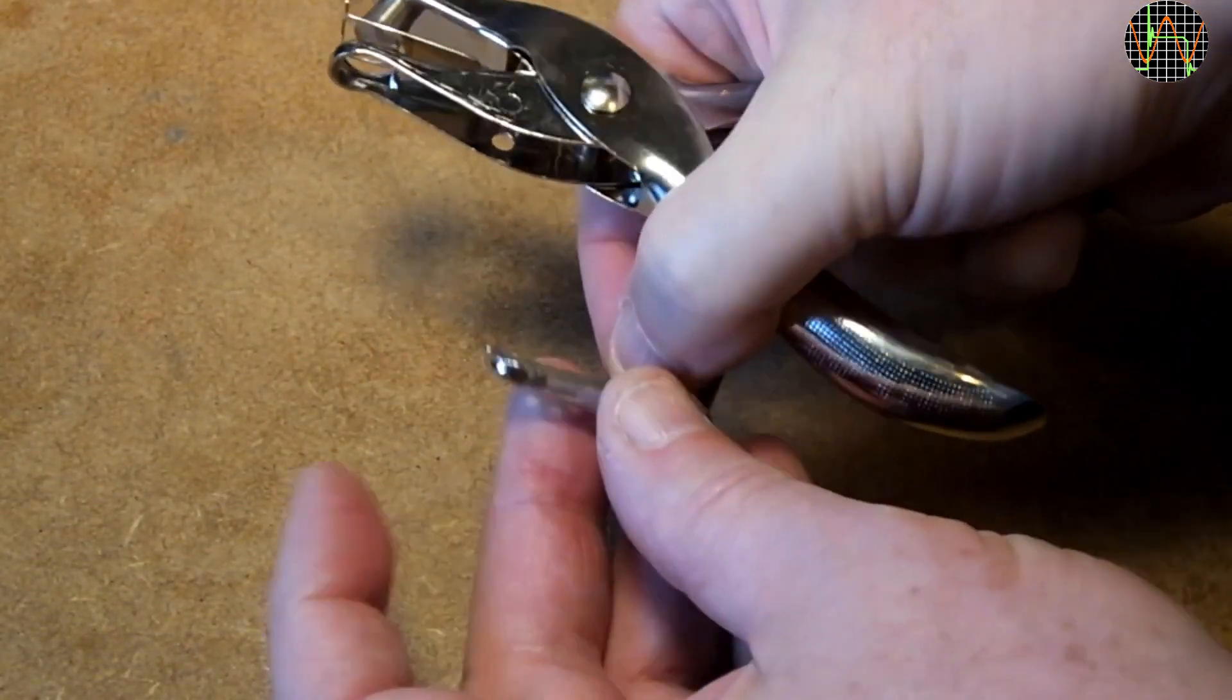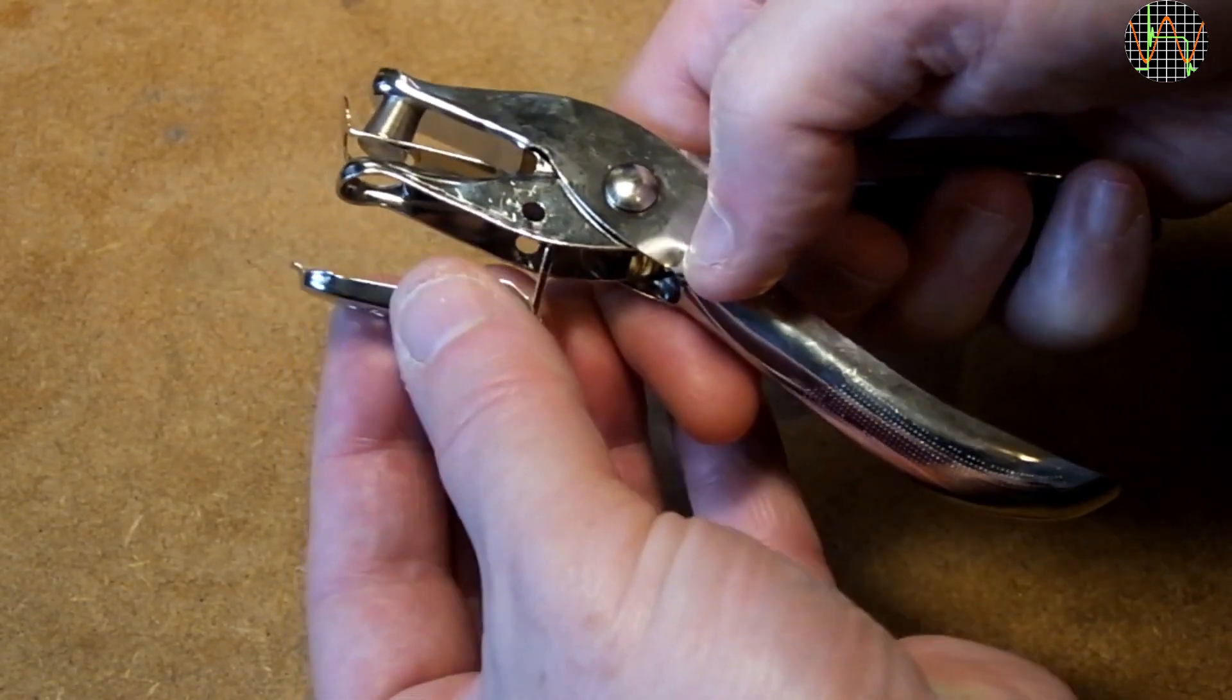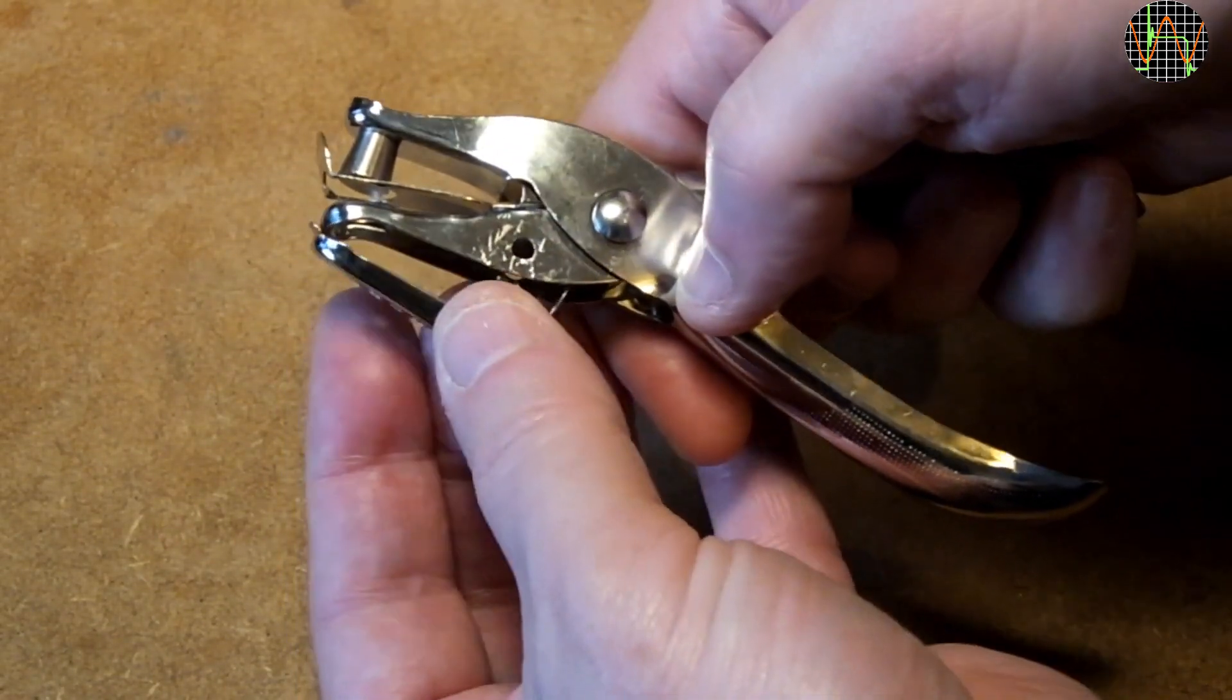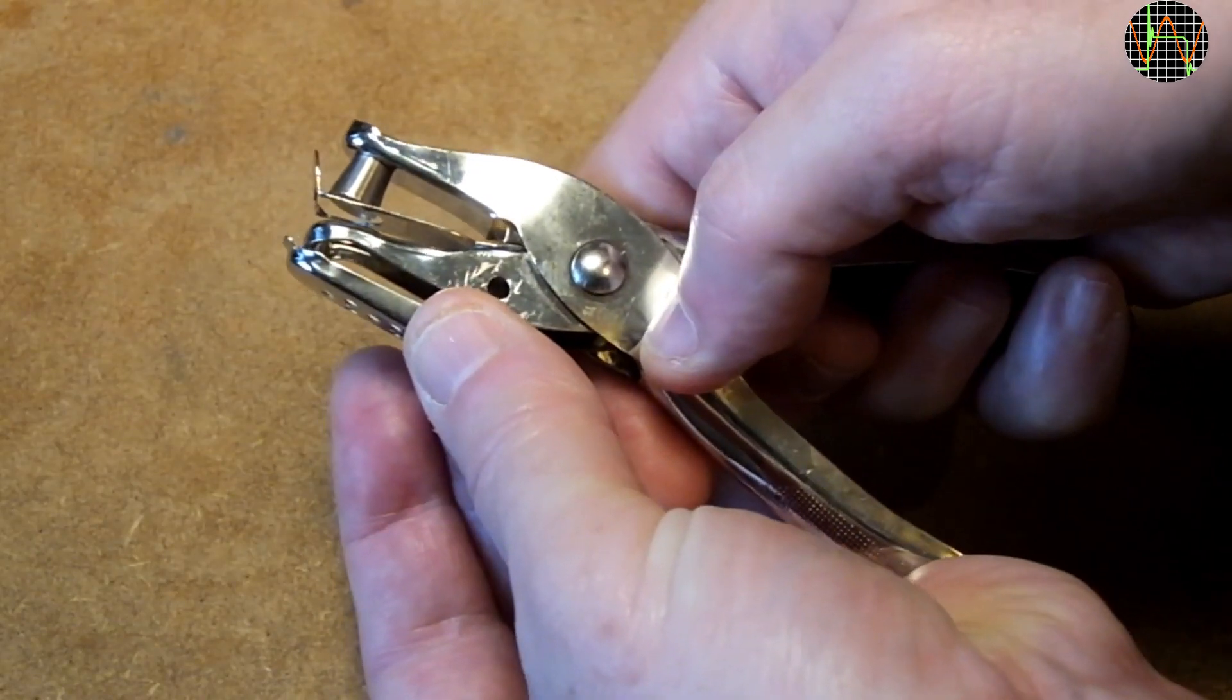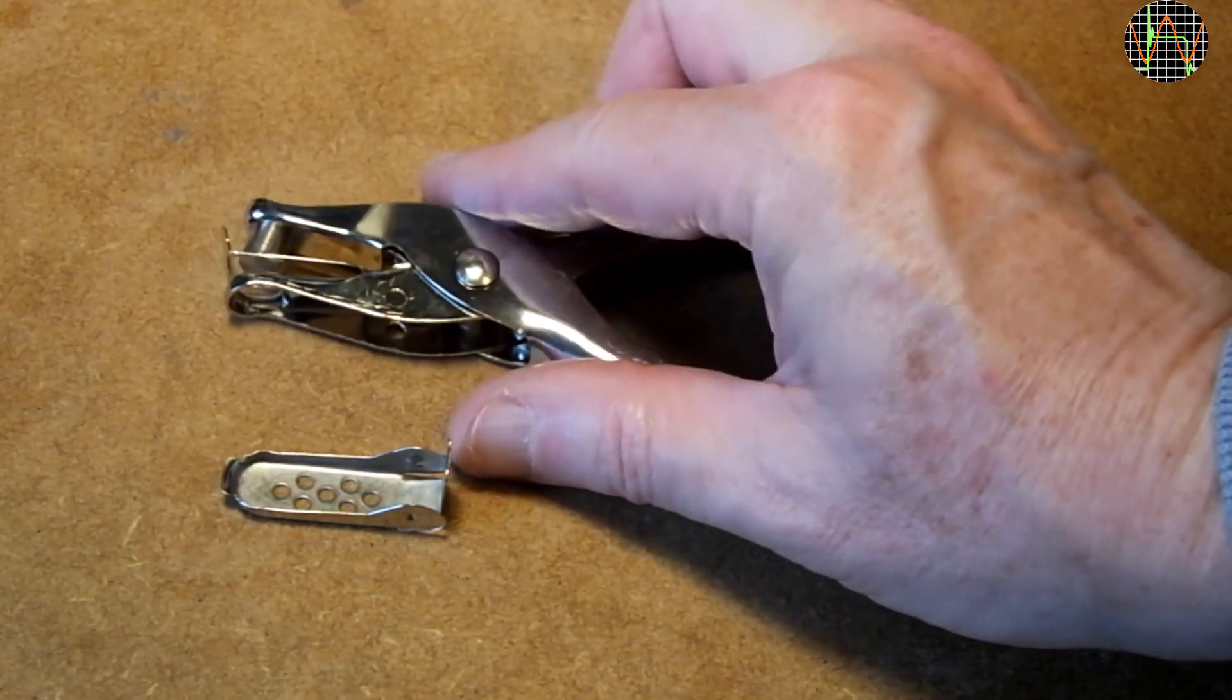With a bit of gentle persuasion using a screwdriver, it is possible to unclip the flap. You could add it back later, but I normally leave it off because without it the puncher can be much better centered on the target area.